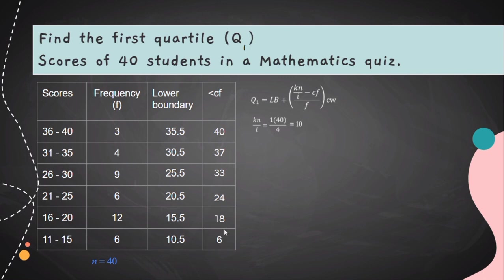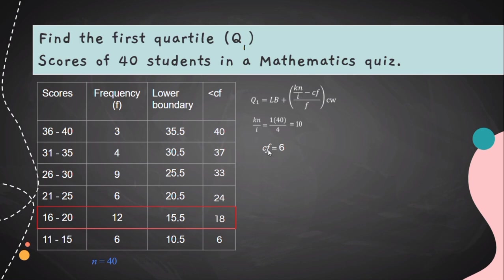The value of 10 falls between 6 and 18 in the cumulative frequency. We take the class corresponding to the higher value, which is 18. So the CF (cumulative frequency of the preceding class) is 6. The lower boundary (LB) is 15.5, the frequency is 12, and the class width is 5.